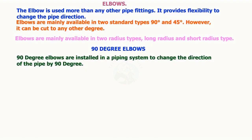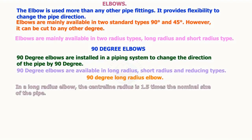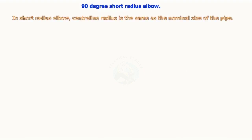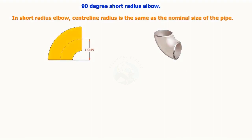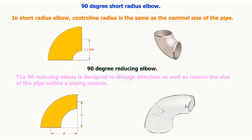90-degree elbows are installed in a piping system to change the direction of the pipe by 90 degrees. They are available in long radius, short radius, and reducing types. In a long radius elbow, the centerline radius is 1.5 times the nominal size of the pipe. In a short radius elbow, the centerline radius is the same as the nominal size of the pipe. The 90-degree reducing elbow is designed to change direction as well as reduce the size of the pipe.